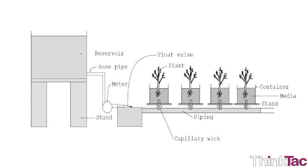The schematic diagram shows an experiment on a wick-based irrigation system. Here, water is transferred to the plants through the piping system.